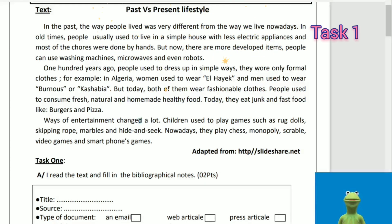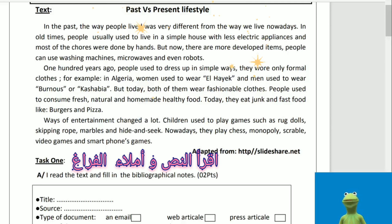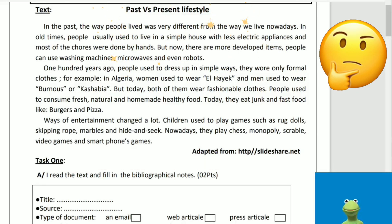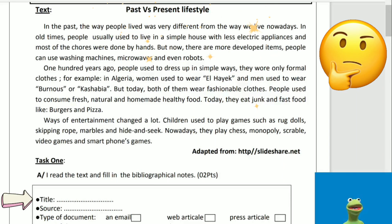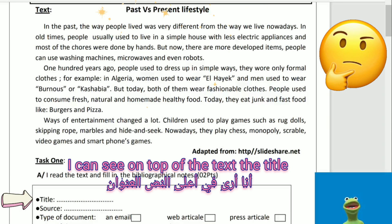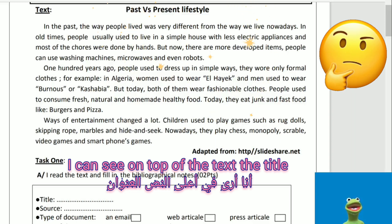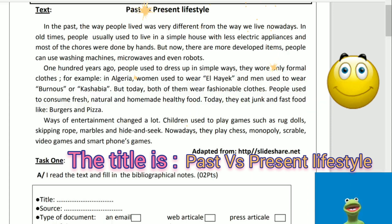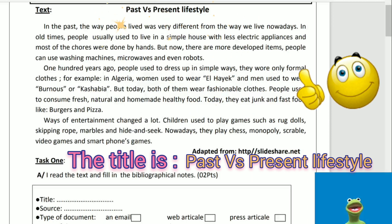Task one: I read the text and fill in the gaps. Title: we can see on top of the text the title — 'Past versus Present Lifestyle.' Source: we can see underneath the text there is the website.